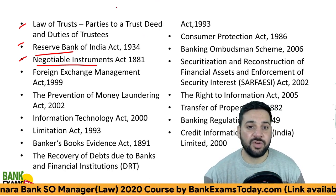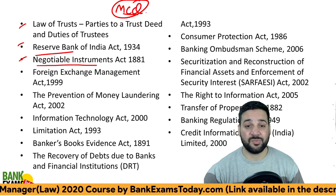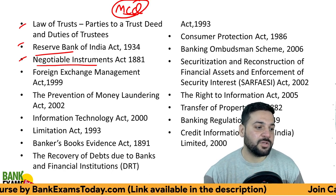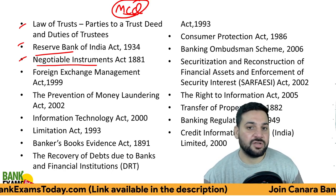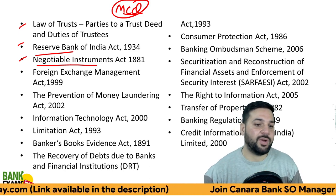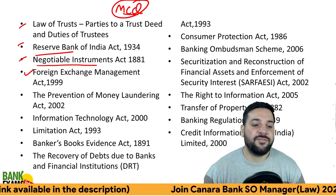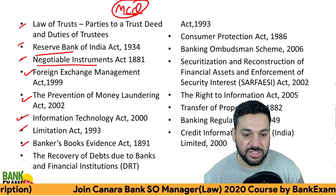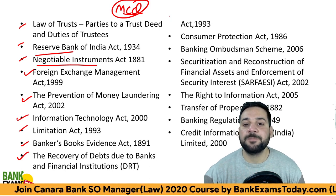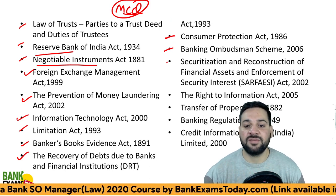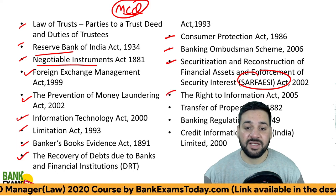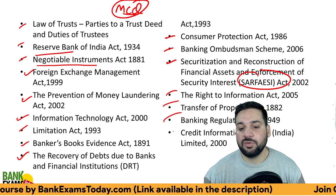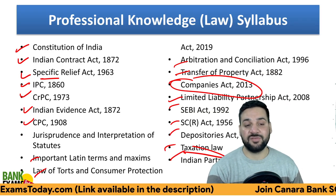Also covered: Law of Trust, RBI Act, Negotiable Instruments Act. One important thing to note — this is an MCQ paper, not a subjective paper. You are not supposed to remember case studies or case laws. Further topics include FEMA, Prevention of Money Laundering Act, IT Act, Limitation Act, Bankers Books Evidence Act, Recovery of Debts (DRT), Consumer Protection, SARFAESI — which is very important — RTI, Transfer of Property, Banking Regulation, and Credit Information Bureau Limited 2000.